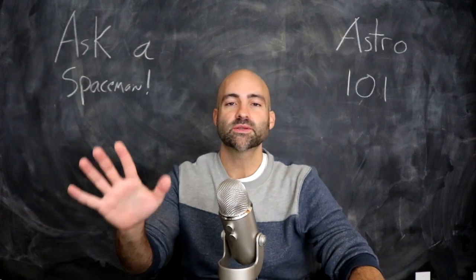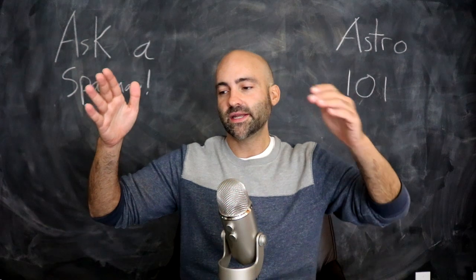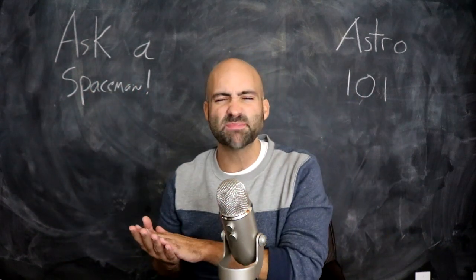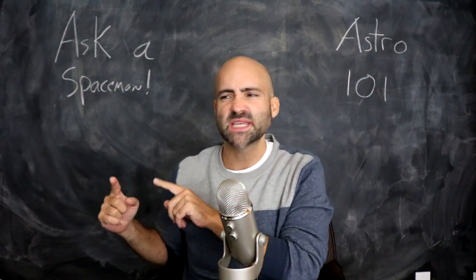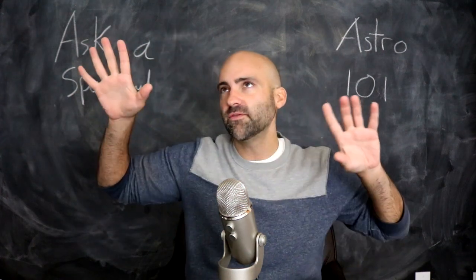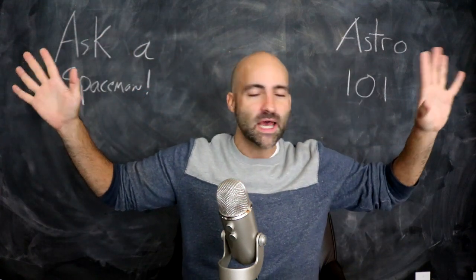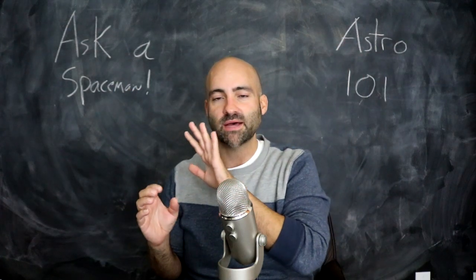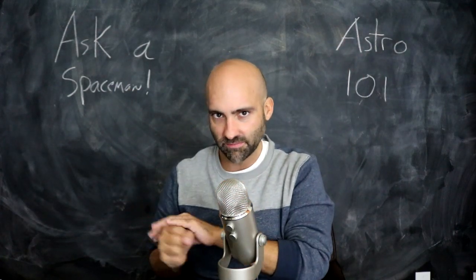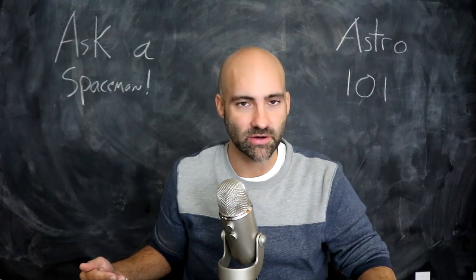I've been doing a series recently on the evolution of stars — stars with different spectral types living along the main sequence and then evolving off and becoming giant stars. But I want to take a moment to talk about the before picture: how stars actually get started.